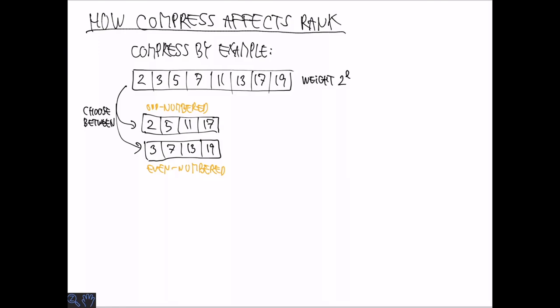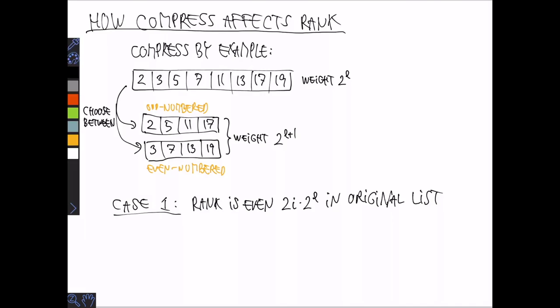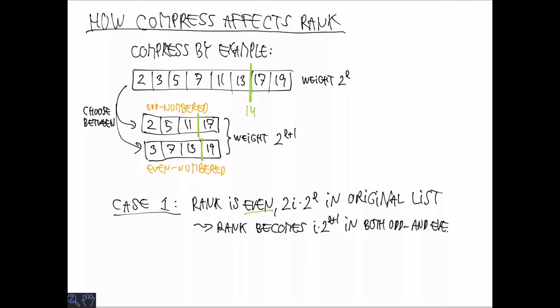So let's think about how this affects rank. So we start with elements that each represent 2 to the L, or have weight 2 to the L, and we want to end up with elements that have half the number of elements that each have weight 2 to the L plus 1. If we think about an element that has even rank in the original list, then the rank with respect to that list is going to be 2i for some i times 2 to the L, where 2 to the L is the number of elements represented by each element. When we do the compression step, the rank is going to remain the same. It's still going to be i times 2 to the L plus 1, both in the odd and the even-numbered case.